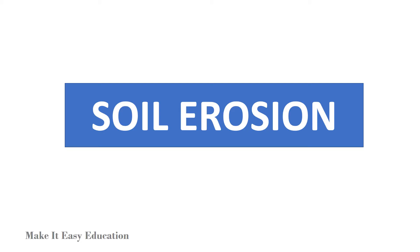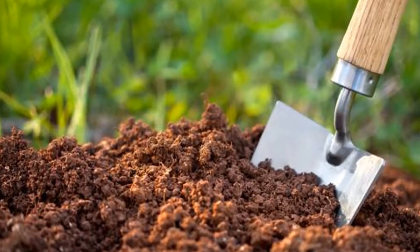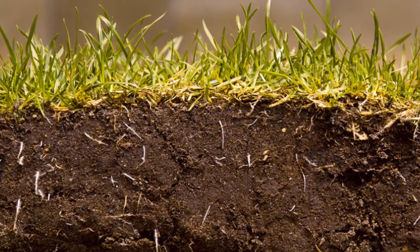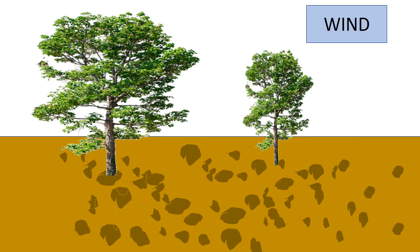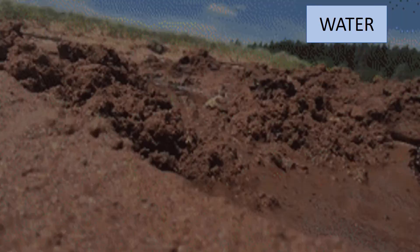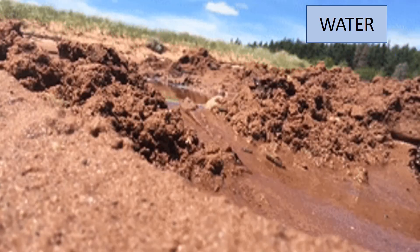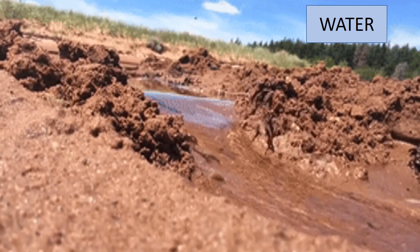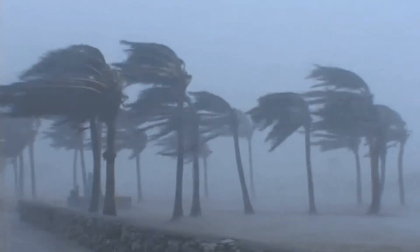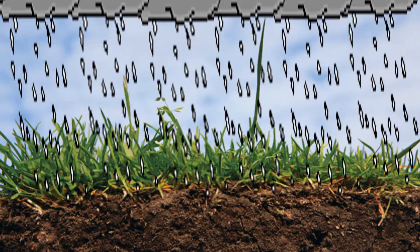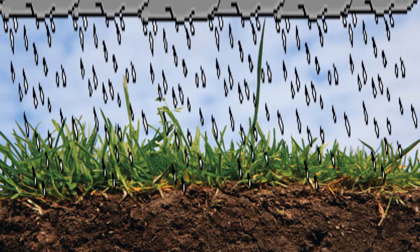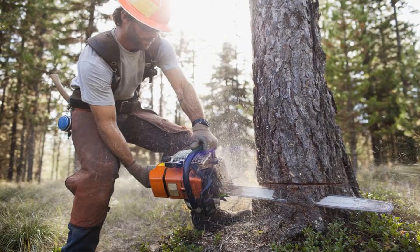Soil erosion. Topsoil is very fertile because it is rich in humus. Wind and water wash away the loose topsoil, leading to soil erosion. Strong wind, heavy rainfall, and cutting down of trees increase soil erosion.